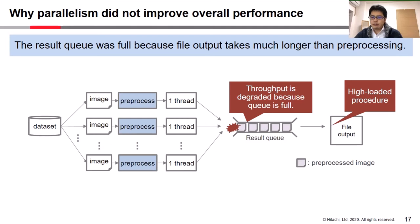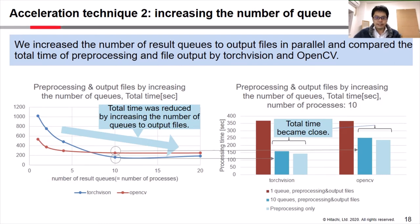We increased the number of result queues, which is equal to the number of processes, made the file output procedure run in parallel, and compared the total time of preprocessing and file output in both TorchVision and OpenCV cases. Please look at the left figure. It indicates the total time of preprocessing and output files by increasing the number of queues. As you can see, total time was reduced in both TorchVision and OpenCV cases by increasing the number of queues.